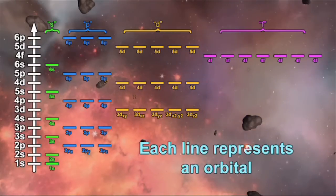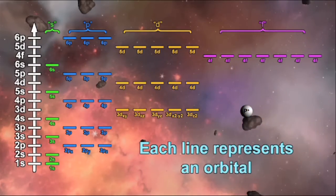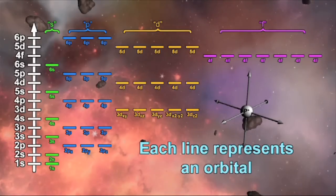Although this diagram may look complicated, remember that each line abstractly represents an orbital, and that all of these orbitals overlap on the same atom.